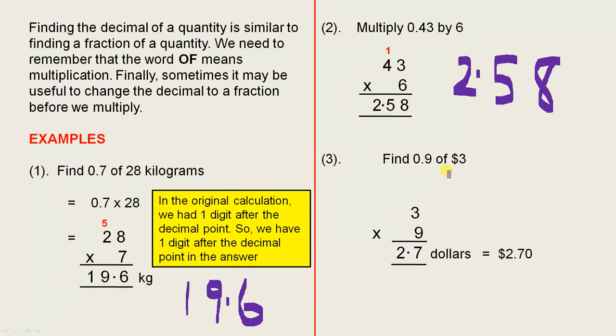0.9 of 3 dollars, remember of means multiplication, so we do that multiplication, 3 times 9. That gives us 27. So when we ended up with 27, there's one digit after the decimal point in the original calculation.